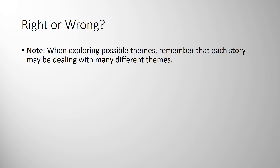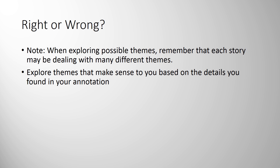Is there a right or wrong theme? Well, when you're exploring, there are many different themes. Story of an Hour deals with a lot of different things — from equality to the repression of women in the Victorian age, to expectations of women, expectations of what a man is supposed to be, family relationships, communication — a lot of different themes. So look for themes that make sense to you based on the details you find when you're annotating.